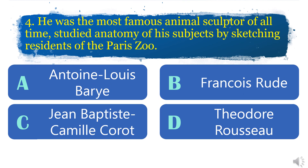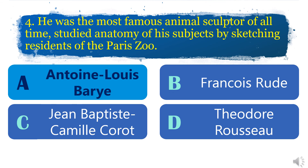Number 4: He was the most famous animal sculptor of all time, studied the anatomy of his subjects by sketching residents of the Paris Zoo. A. Antoine Louis Barry. B. François Rude. C. Jean-Baptiste Camille Corot. D. Théodore Rousseau. The answer is Antoine Louis Barry.